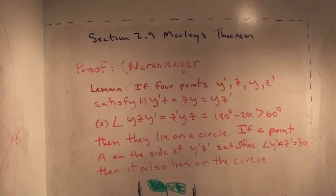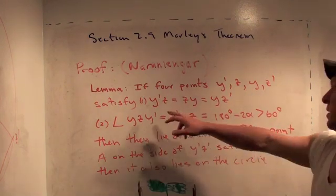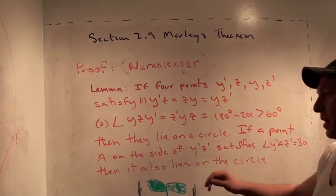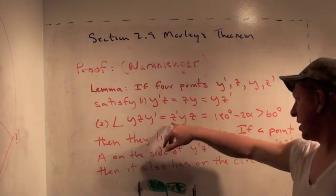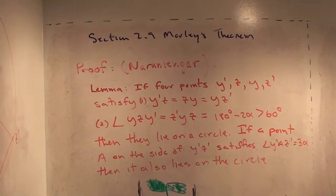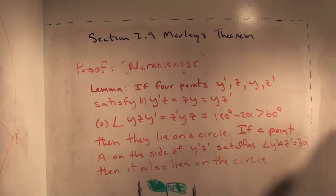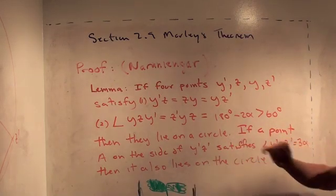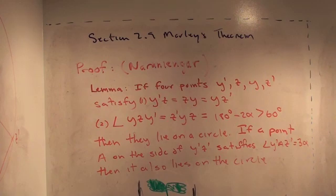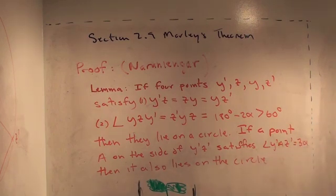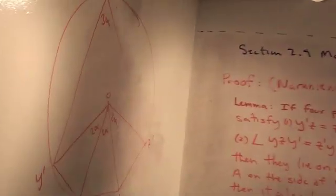And here's the lemma. If four points Y prime, Z, Y, and Z prime satisfy the distance between them Y prime to Z equals Z Y equals Y Z prime, and the angle Y Z Y prime equals Z prime Y Z equals 180 minus 2 alpha for some alpha, and as long as that angle is bigger than 60 degrees, those four points lie in a circle. Further, if there's a fifth point A that satisfies Y prime A Z prime equals 3 alpha, then that point also lies on the circle. And let me show you the picture of what I'm talking about here.